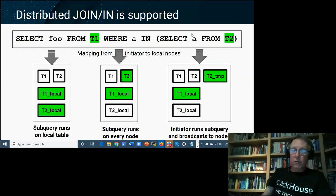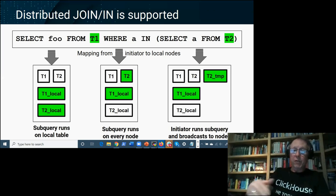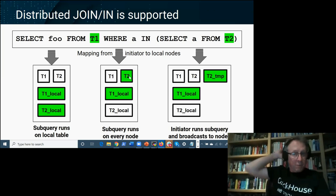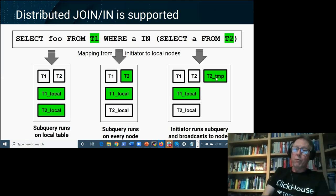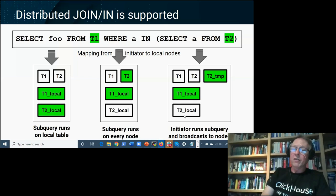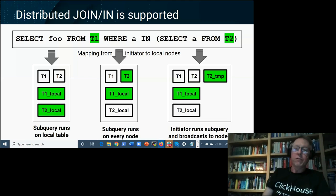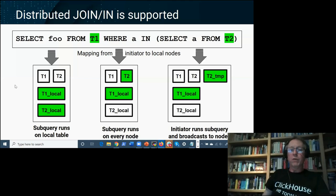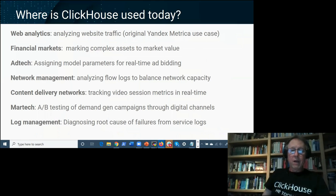With the GLOBAL keyword for distributed joins, ClickHouse can run a SELECT first and broadcast the result out to all nodes as a temp table, which nodes then join against. There's no magic — you use query settings and the GLOBAL keyword to control this behavior. The good news is ClickHouse has a very good query log, so if you're not seeing what you expect, you rewrite your query based on what the log shows.